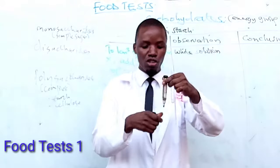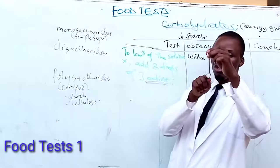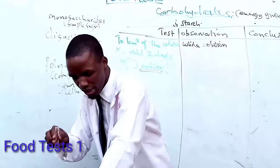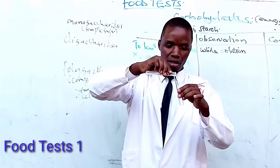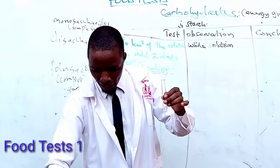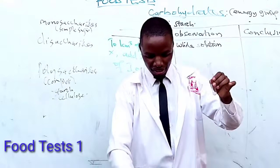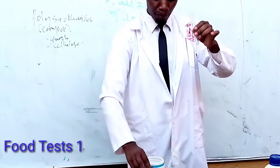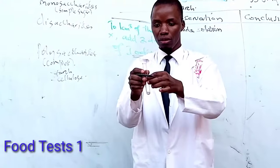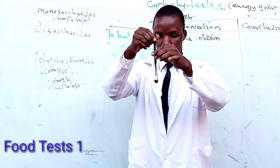This white solution will be my Solution X. From this solution I'm going to pick one centimeter — a small sample. Then I add three drops of iodine. My iodine is here. I pick three drops and add them to the solution. Please take note of what happens. I add three drops — one, two, three.